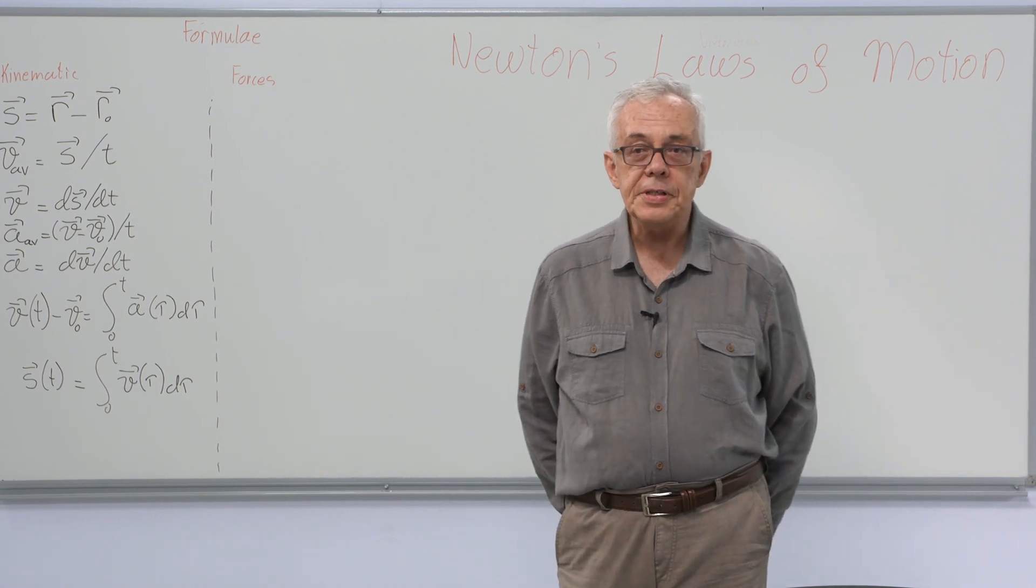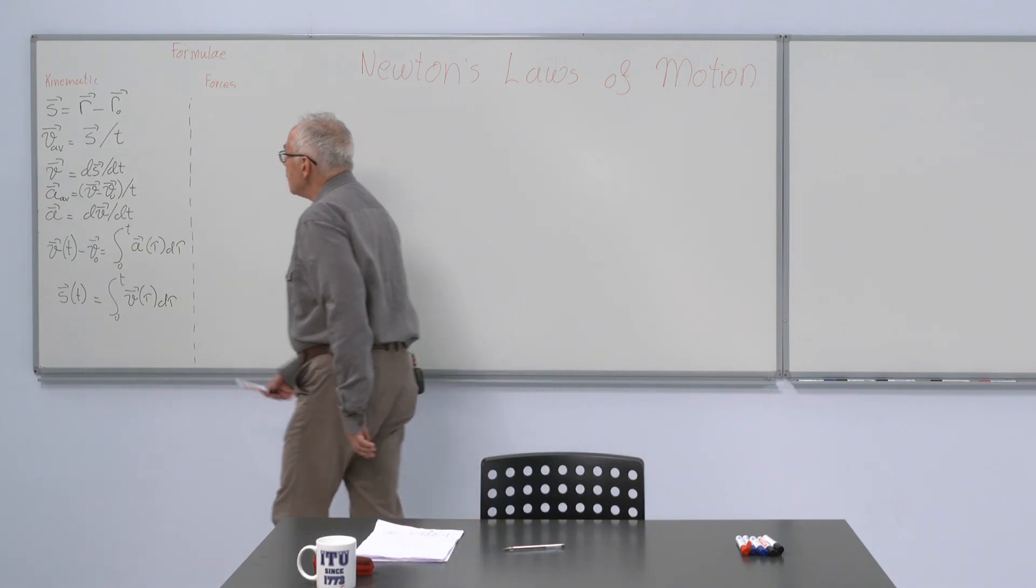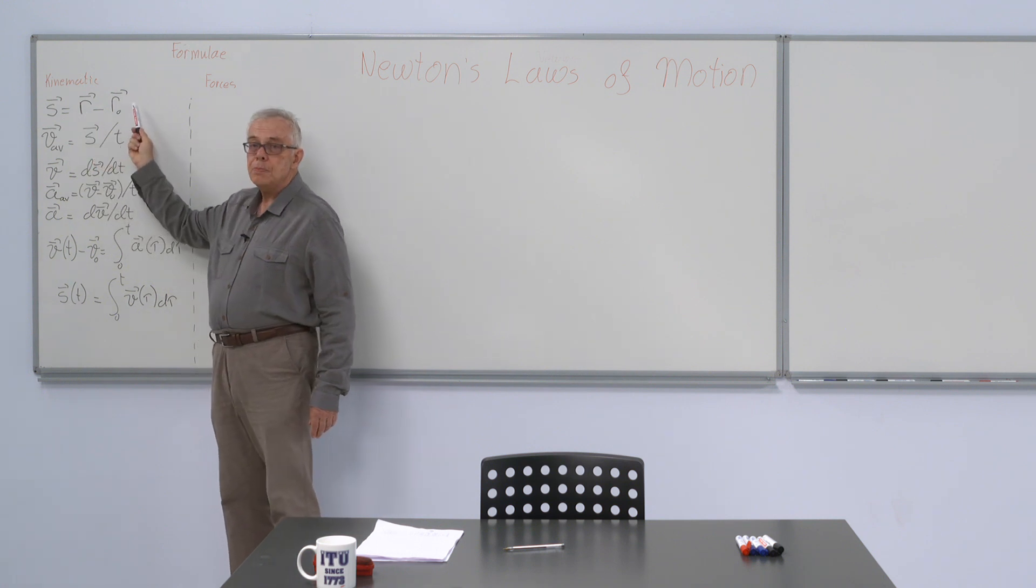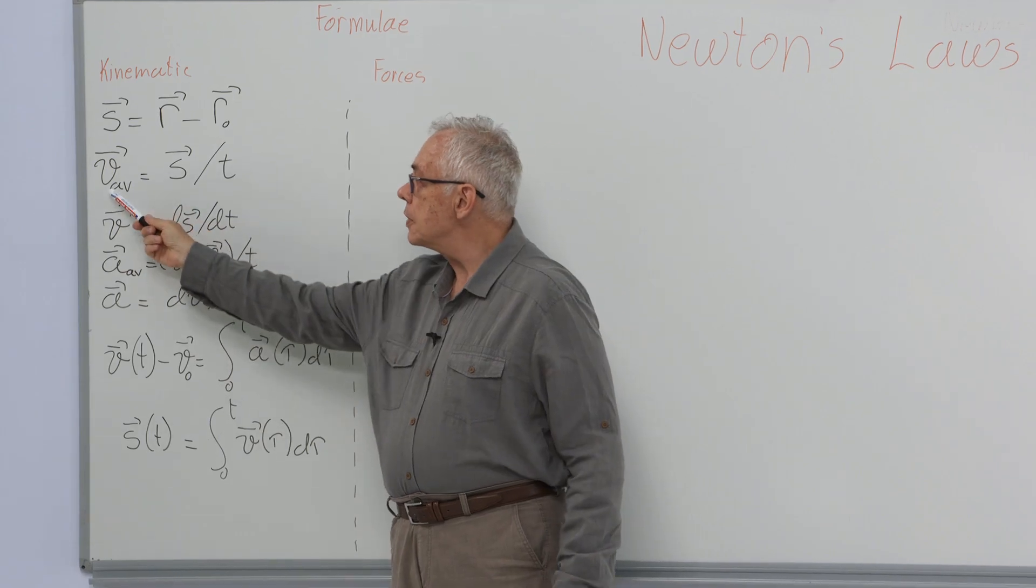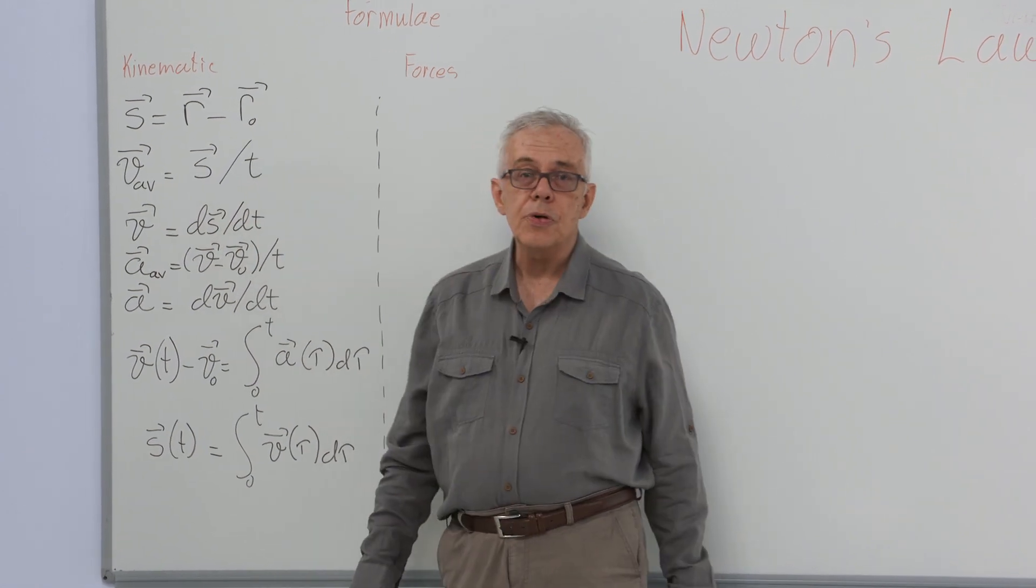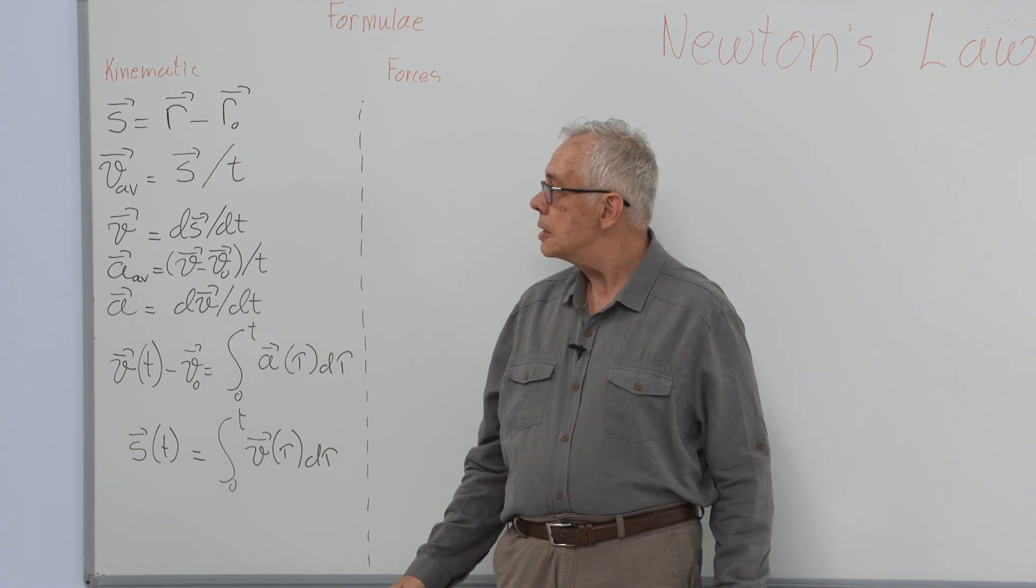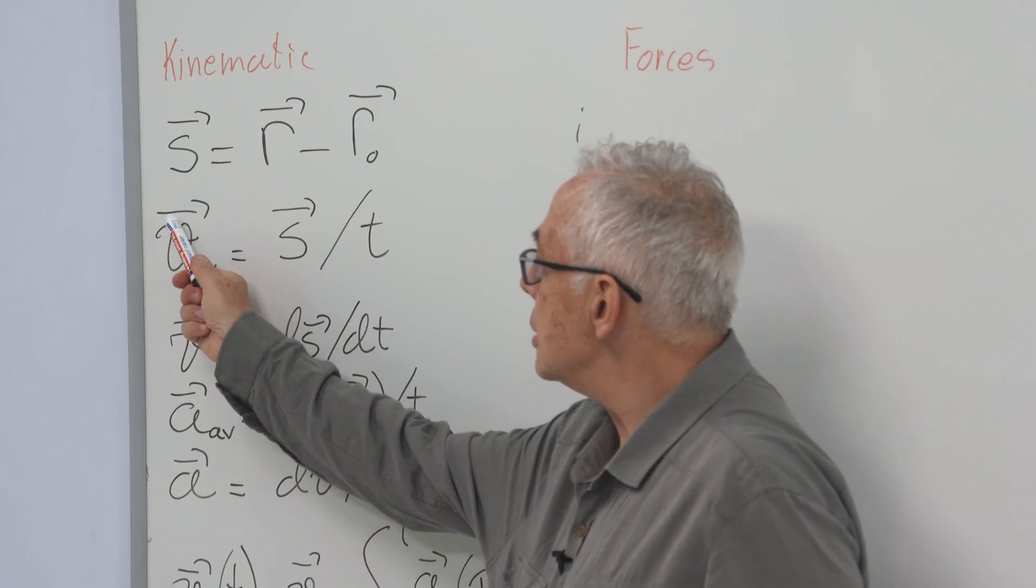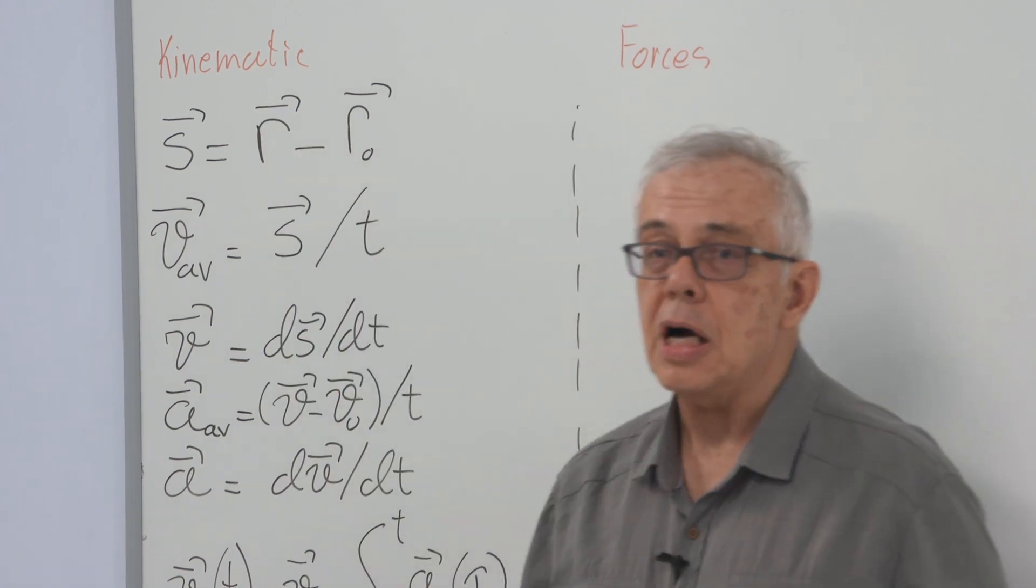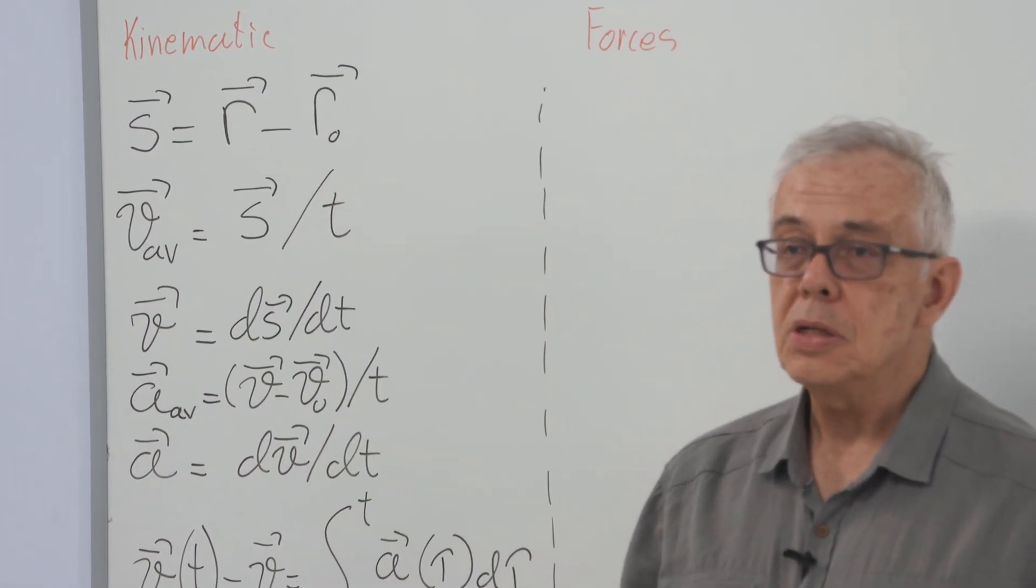Let's first remember what we saw. We defined displacement as the change in position. Average velocity is the ratio of displacement to the time it took for the displacement to take place. Please note that displacement, velocity, and position are all vectorial quantities.